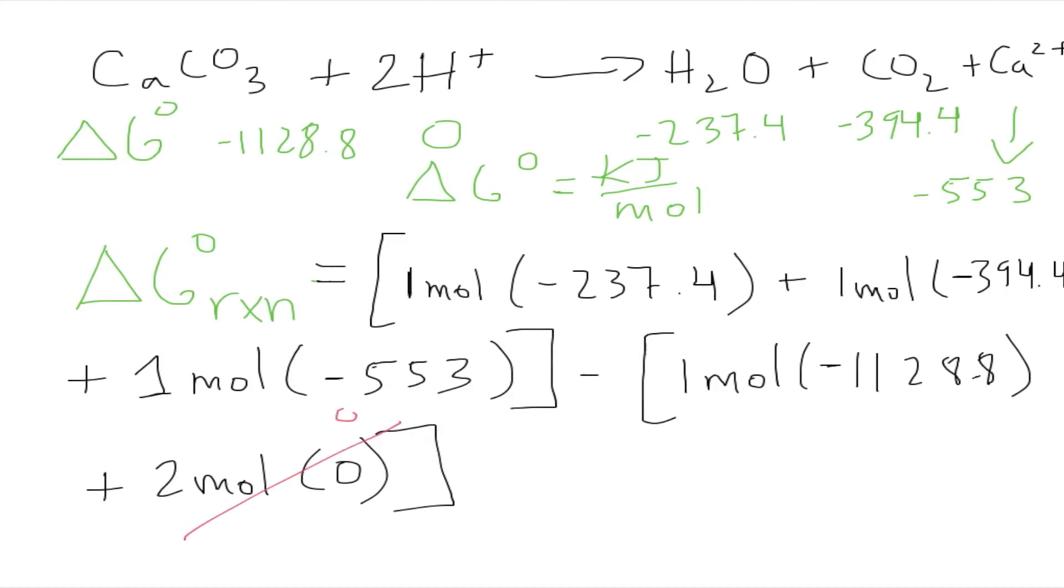Plus the hydrogen has two moles times zero. We can just ignore that and say this is zero. So we calculate that and we'll get that the Delta G for the reaction is equal to 55.8 kilojoules.